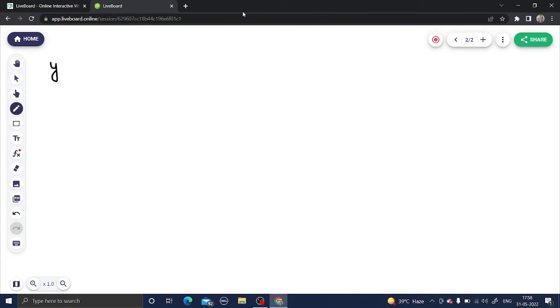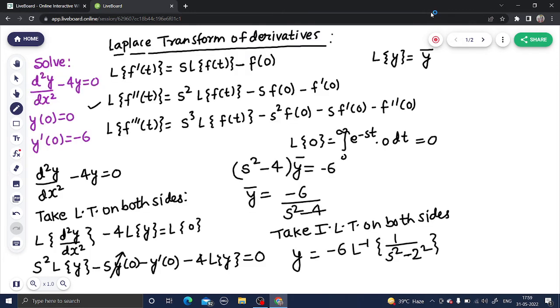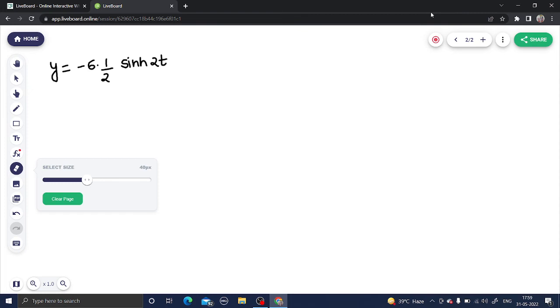Your y is -6 times 1/a, where a is 2, times inverse hyperbolic sin. We are dealing in terms of x, so we will have x here. This is y equals -3 sinh(2x).